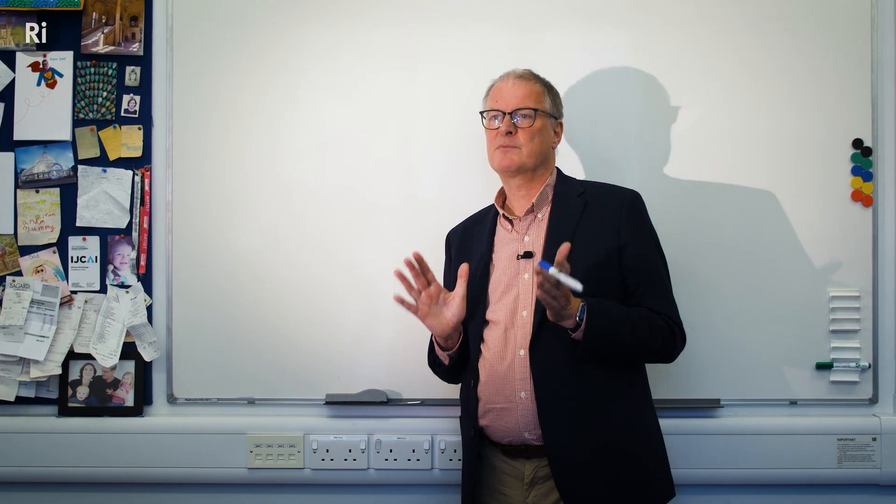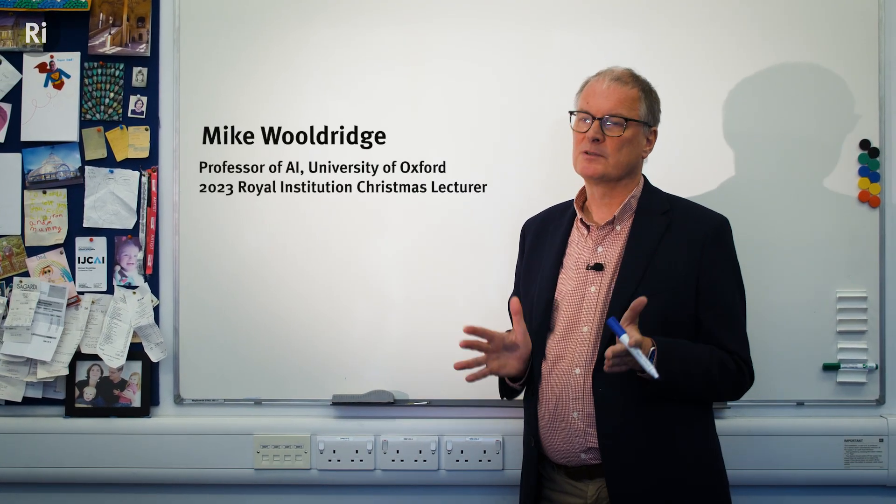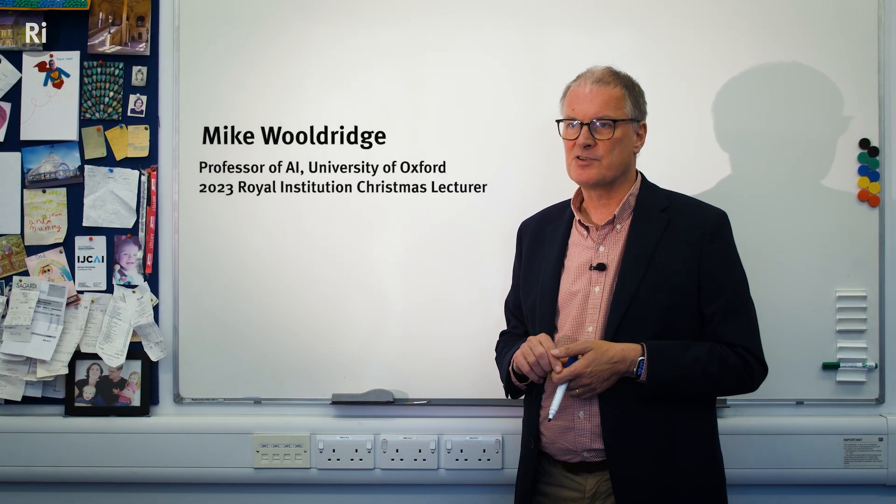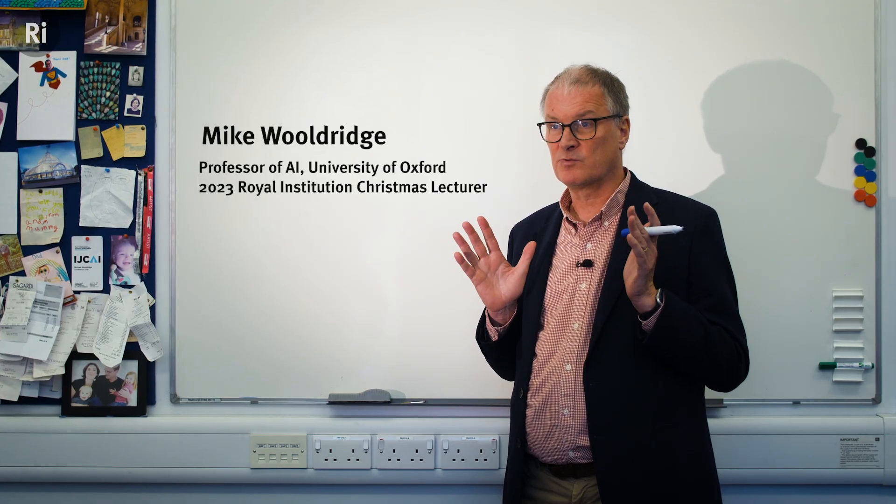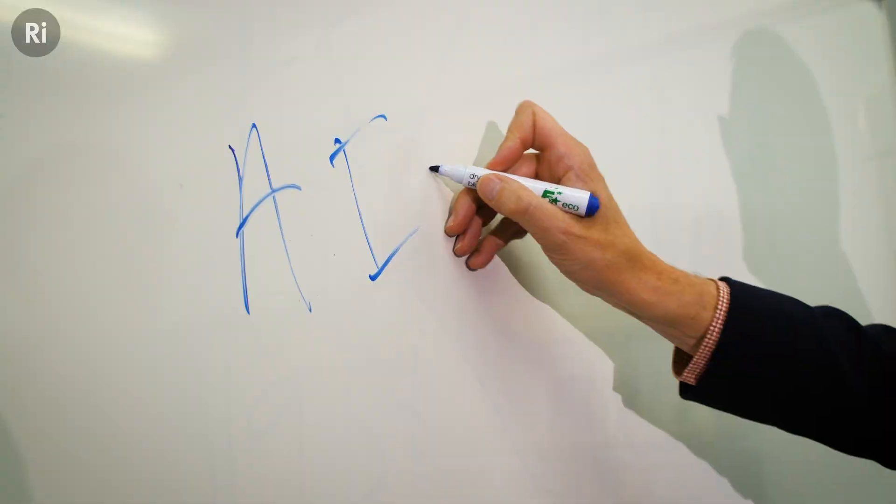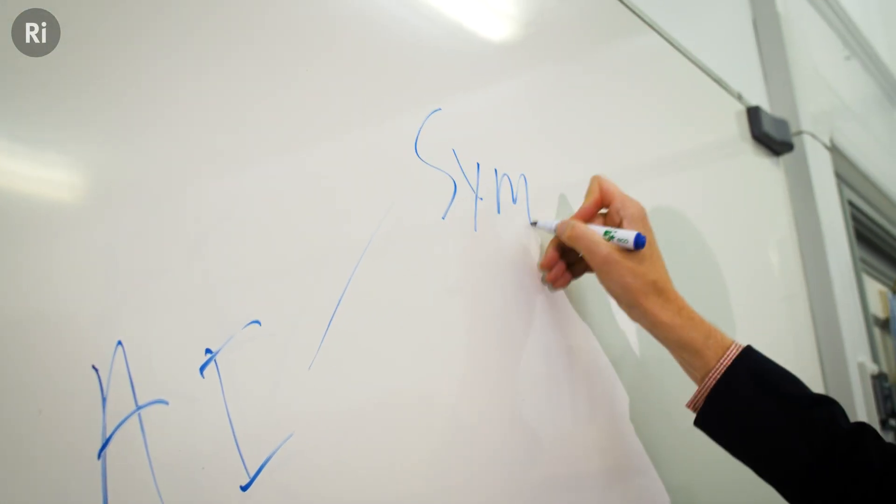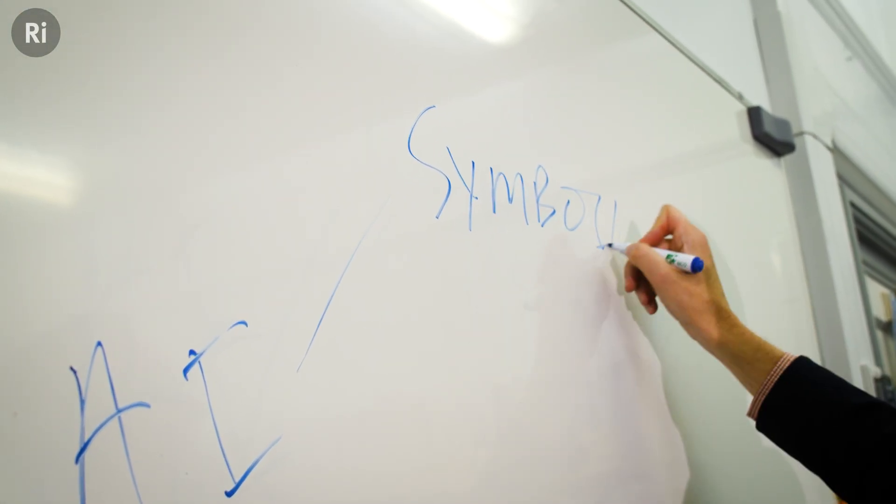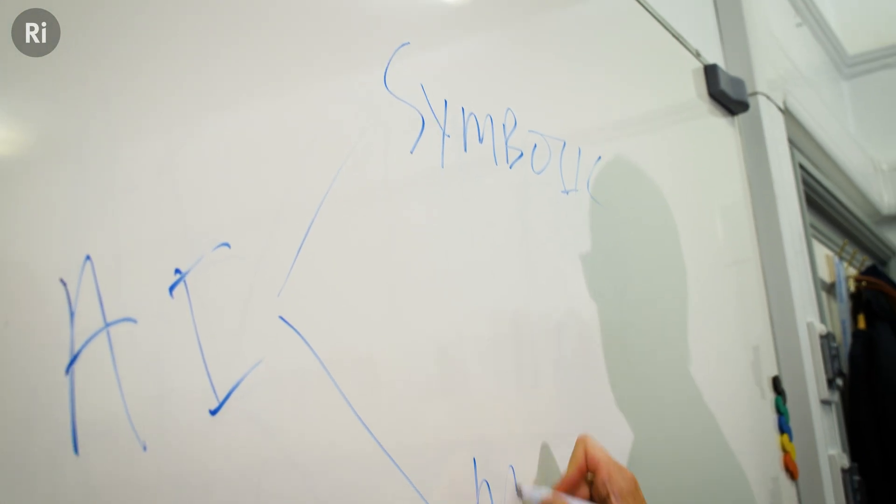There are two main approaches to building systems that are capable of intelligent behavior. Those two approaches are called symbolic AI and neural networks. AI was founded in 1956, and the two main approaches are symbolic AI and neural networks.